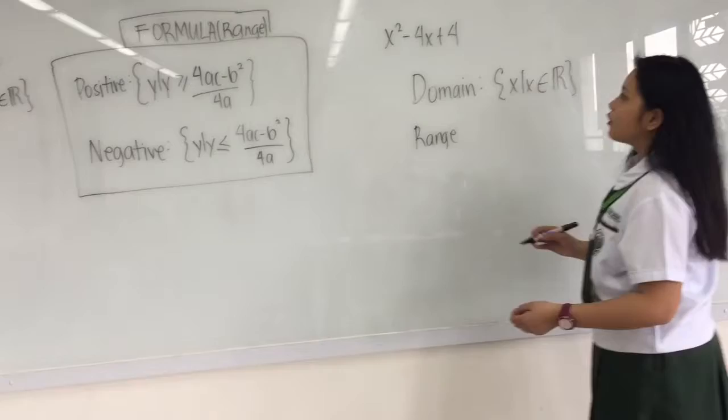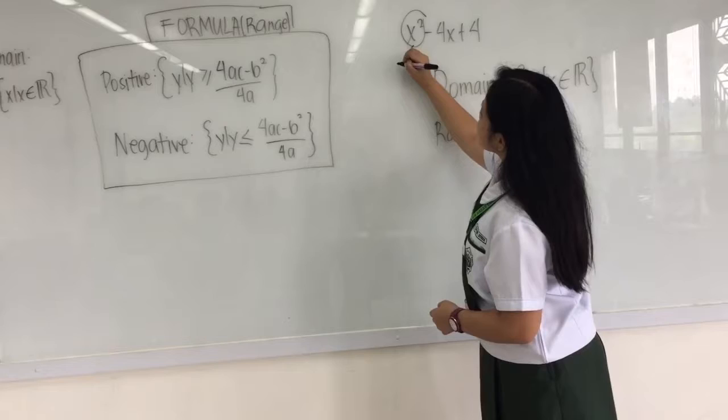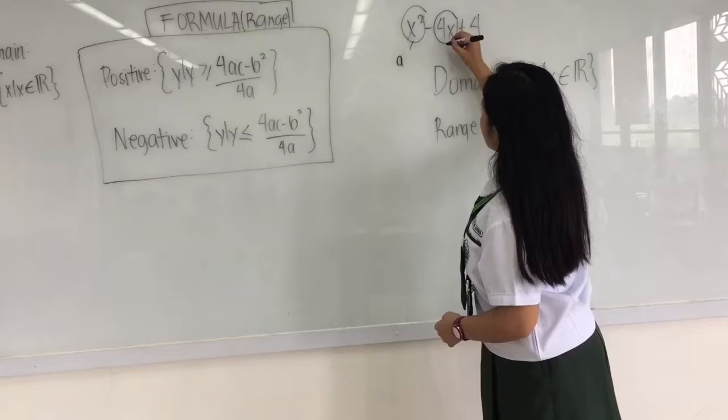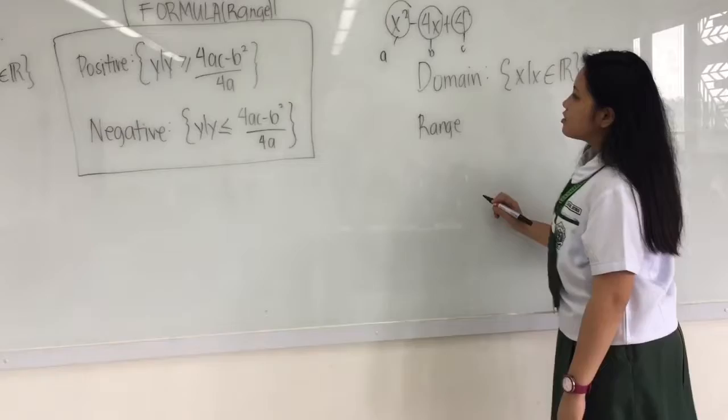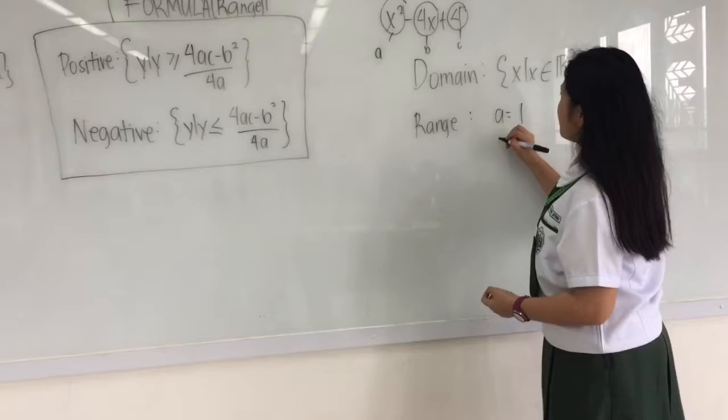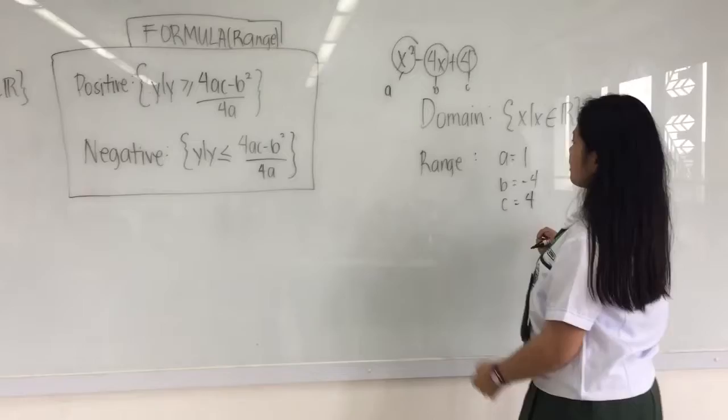For the letters: letter a is the coefficient of x squared. Our b is negative 4, and our c is 4. So a is equal to 1, b is equal to negative 4, c is equal to 4.